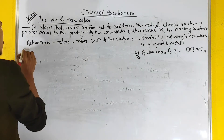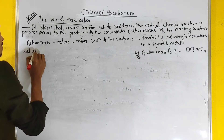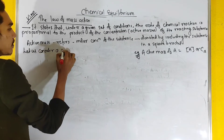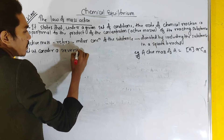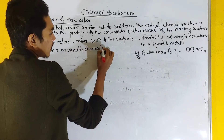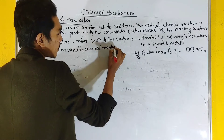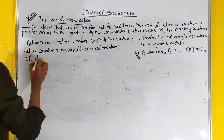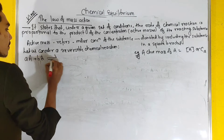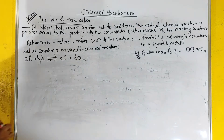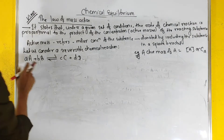Let us consider a reversible chemical reaction: A + B ⇌ C + D, where A, B, C, and D represent the reacting species.